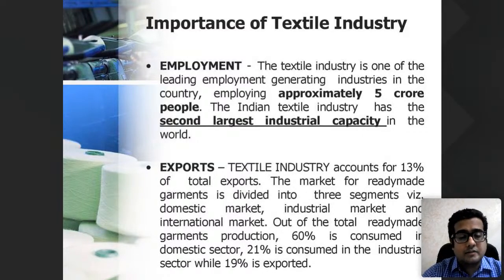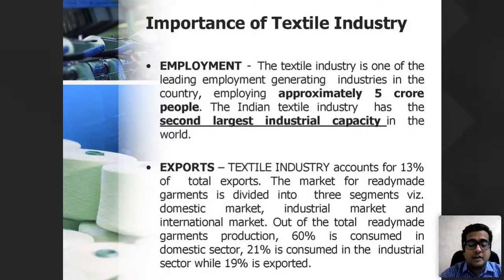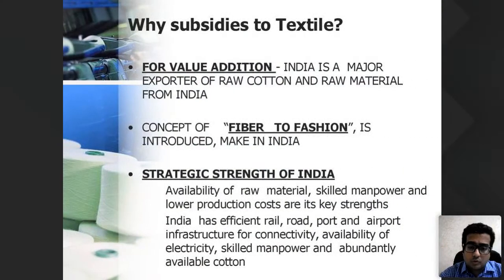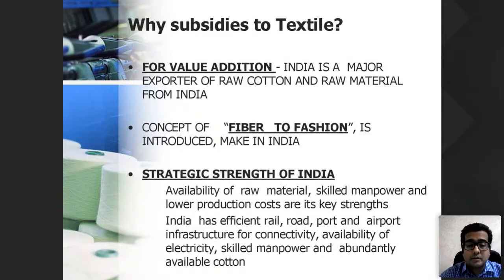The landscape of India is such that plenty of raw material for textile industries is available. Farmers grow a lot of cotton, silk, and wool, and the government wants this raw material converted into value-added finished products so that everyone from farmer to end product benefits. The government has a lot of focus on textile industry and wants to incentivize and promote it through subsidies.